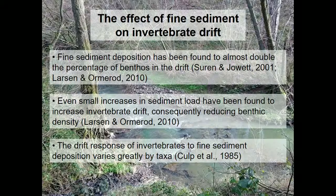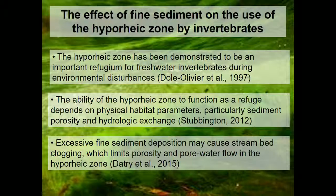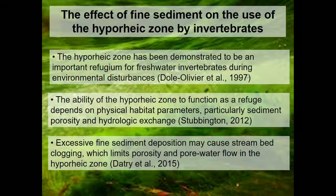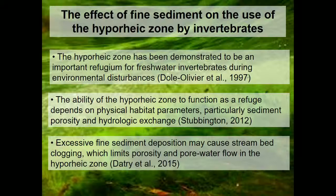All sediment for treatments was sourced from areas adjacent to the mesocosm channels, and everything was frozen for 48 hours prior to use to avoid introducing extra invertebrates. When adding sediment, it was added in solution ahead of each channel for three minutes. The channels have tubes for sampling the hyporheic environment at 5, 11, and 18 centimeter depths, with holes drilled at the bottom so water can be drawn up from corresponding depths. Drift nets were also used to sample the drift.